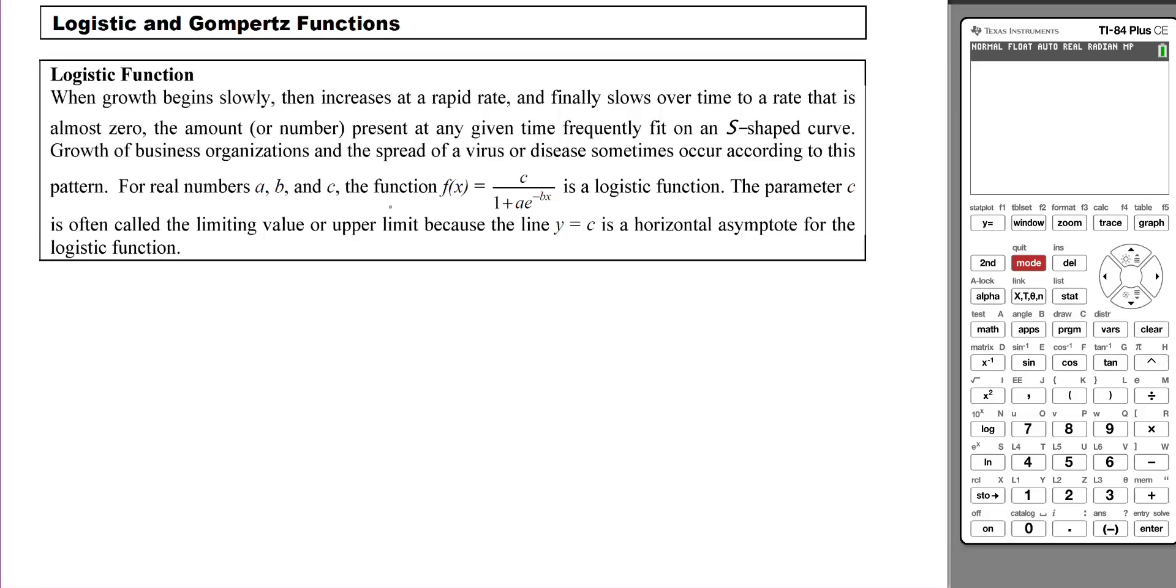The parameter c is often called the limiting value or upper limit because the line y = c is a horizontal asymptote for the logistic function.